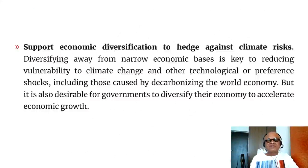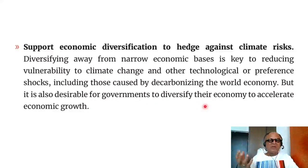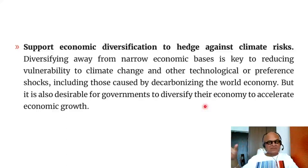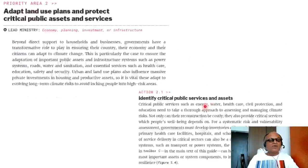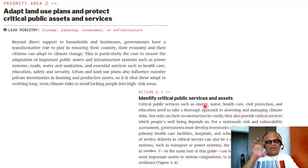A third option is to support economic diversification to hedge against climate risks. Diversifying away from narrow economic bases is key to reducing vulnerability to climate change and other technological or preference shocks, including those caused by decarbonizing the world economy. It's also desirable for governments to diversify their economy to accelerate economic growth, though there is the more fundamental question of whether growth can be accomplished without adding more greenhouse gas emissions. Some sort of life cycle analysis is necessary to ensure economic diversification and the focus on growth don't increase climate risk itself. We'll come back and look at Priority Area 2, on adapting land use plans and protecting critical public assets and services, in the next podcast.